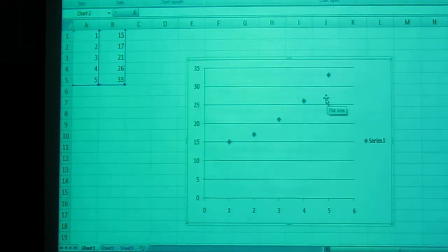And the scatter plot appears. Now to make our line of best fit, we click on our points, and then right-click on the points.